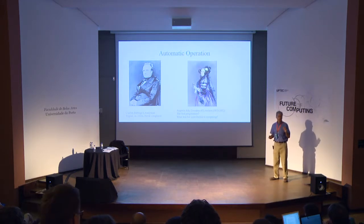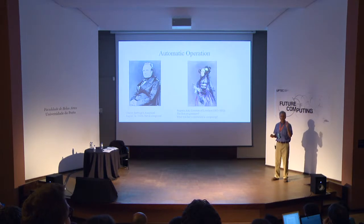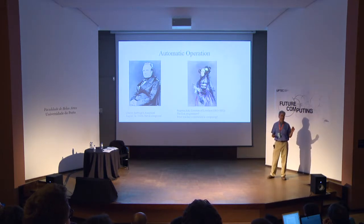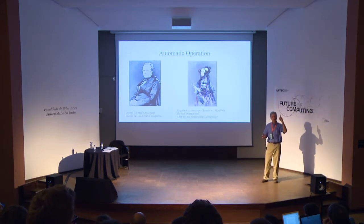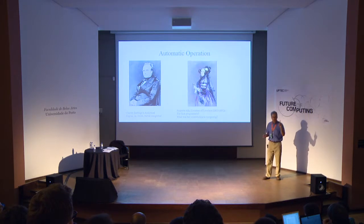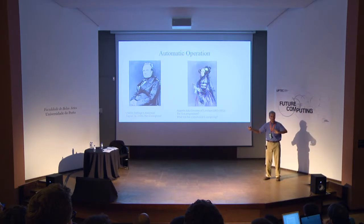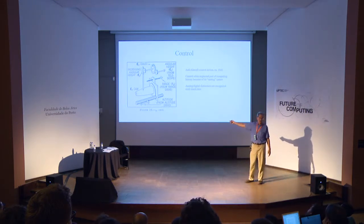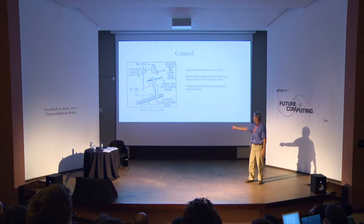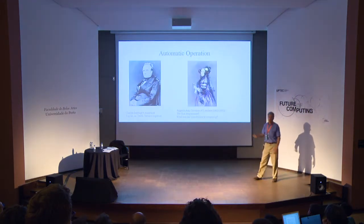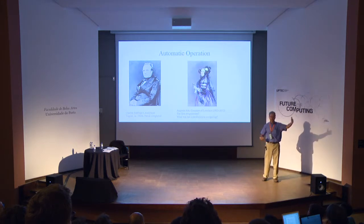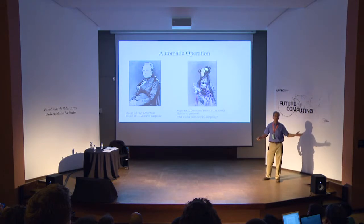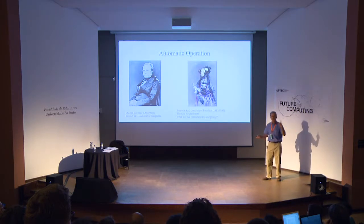Augusta Ada, Countess of Lovelace, wrote an account of the analytical engine describing how it could be used to solve certain problems, and has been called the world's first programmer — though there's a lot of controversy. What she did understand was something very fundamental: the distinction between hardware and software. She understood that you could have a different set of Jacquard punch cards and get the machine to do different things — unlimited, just by imagination. Any equation. That was a key insight.